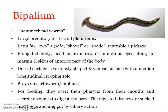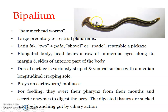Bipallium has an elongated body, and the head region bears a structure known as an auricle. Even though the body is not differentiated into head, trunk, and tail, the anterior expanded part represents the head region. The head bears a row of numerous eyes along its margin and along the sides of the anterior part of the body — a very unique arrangement of photoreceptors. The dorsal surface is usually striped, and the ventral surface is provided with a longitudinal creeping sole that aids in the slithering movement.